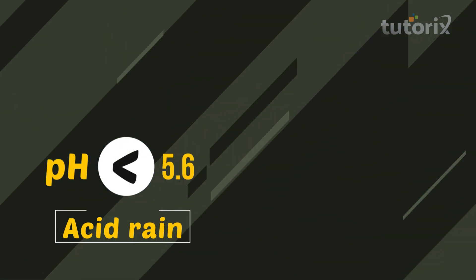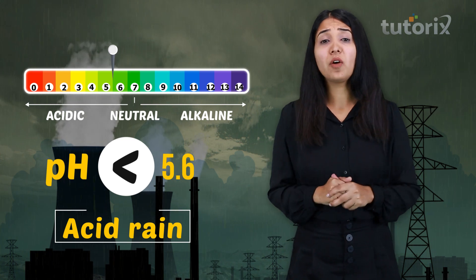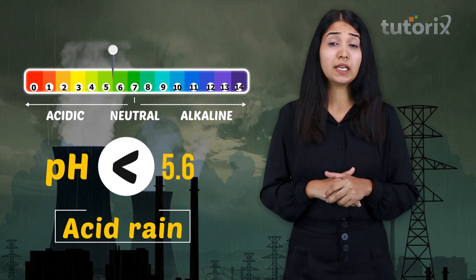Whenever the pH of rainwater goes less than 5.6, it is called acid rain. This acid rain flows into water bodies like rivers and lakes, and the aquatic life is disturbed. Since the pH is too acidic — around 5.6 — the aquatic life might even get killed, as living organisms require a neutral pH range.